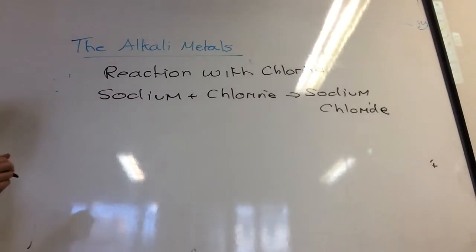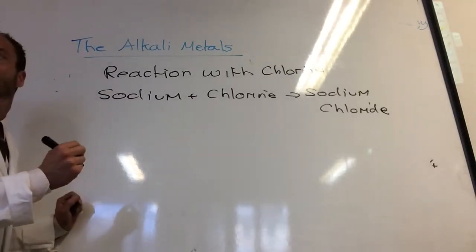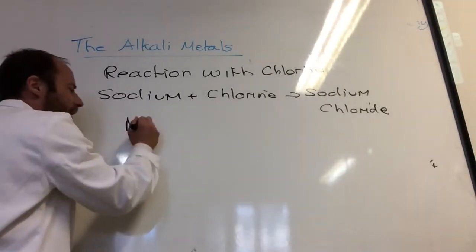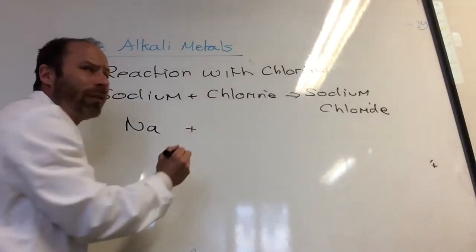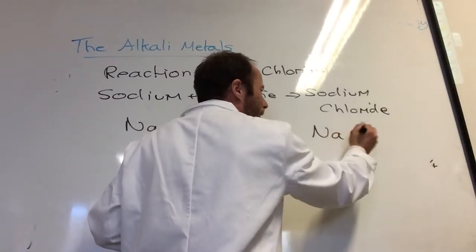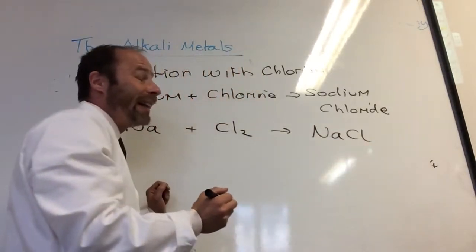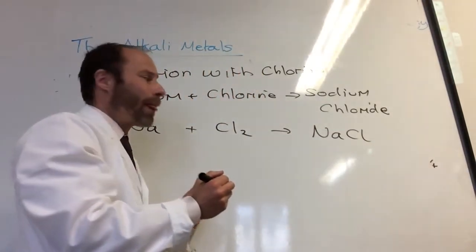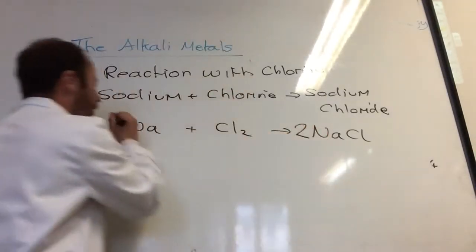In terms of symbol equations, Sodium is Na, Chlorine we always write as Cl2, the formula of Sodium Chloride is NaCl. Yeah, I need two of those.